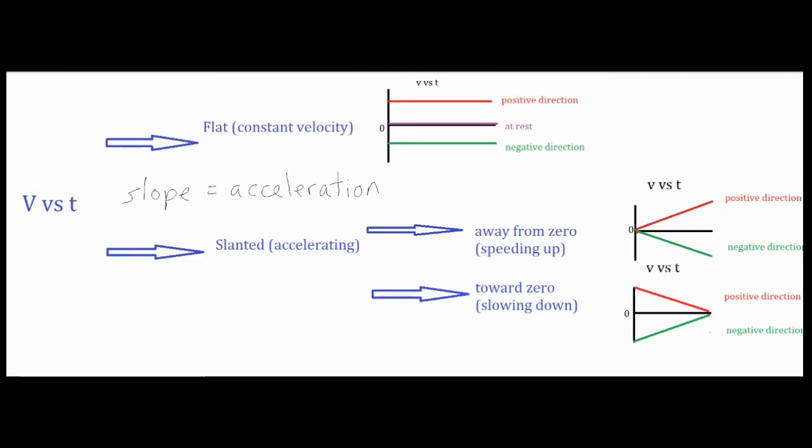Now going to the bottom, if it has any sort of slope or slant to it, that means that there is an acceleration. Just like we talked about before, the slope is the acceleration, so if there's any sort of slope that means it is speeding up or slowing down.